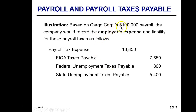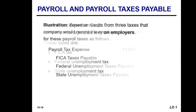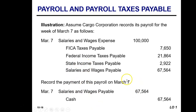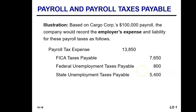Going back to our previous journal entry where total gross earnings were $100,000, this journal entry is also made at the end of the pay period to recognize the taxes owed by the employer. You debit payroll tax expense, credit FICA tax payable for the same amount withheld from employees' earnings, then recognize the amount owed for federal unemployment taxes and state unemployment taxes. There are essentially two sets of journal entries made at the end of each pay period: one to record the payroll information along with the payment made to employees, and one to recognize and record the taxes owed by the employer.